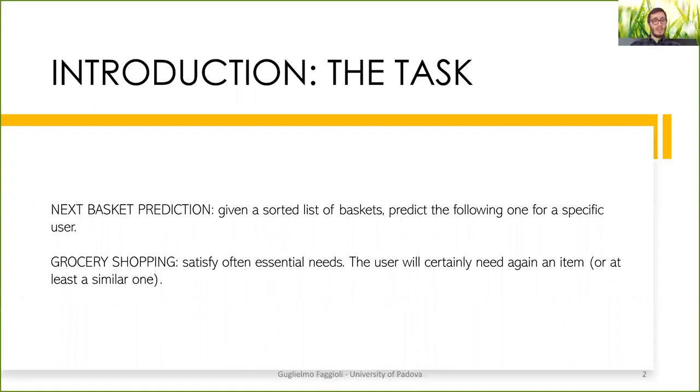Additionally, we were set in a very specific setting, the one regarding grocery shopping. The grocery shopping has some peculiarity. First of all, it is linked to the satisfaction of human essential needs, such as drink, eat, or personal hygiene. Because of that, it is very likely that an item that has been bought once will be needed by the user again in future and thus will be bought again. This is different from many other settings where recommender systems are employed, where once an item has been bought or consumed, it is less likely that it will be bought or consumed again in future.